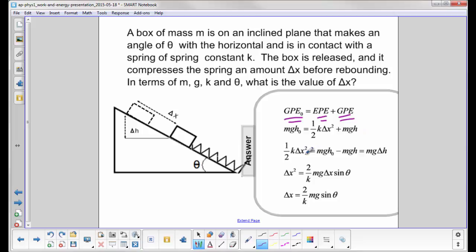We isolate one half K delta X on the left side and on the right we have h0 minus h times mg. Well what is that equal to?